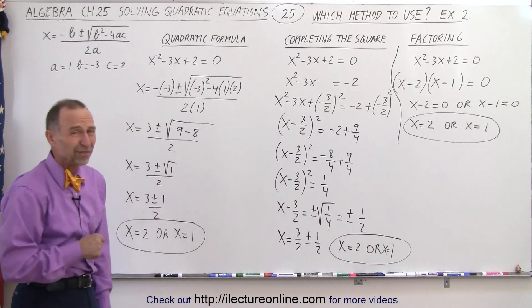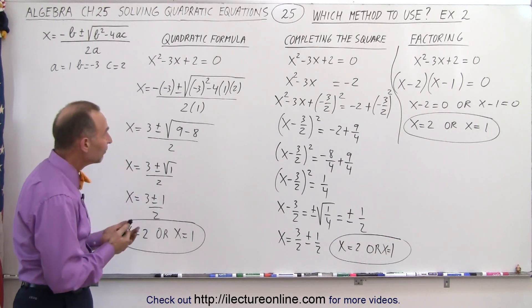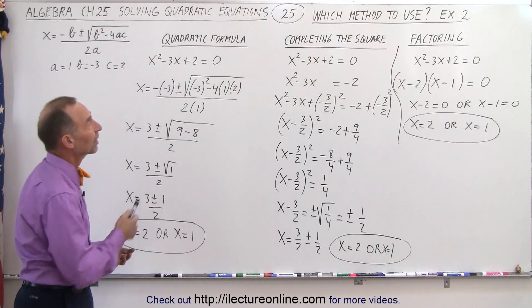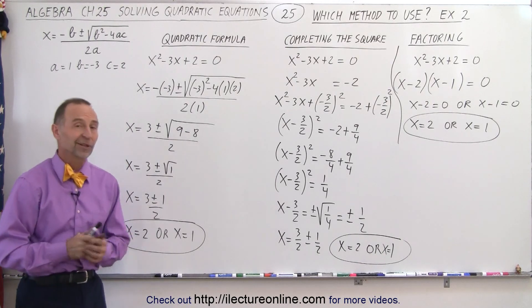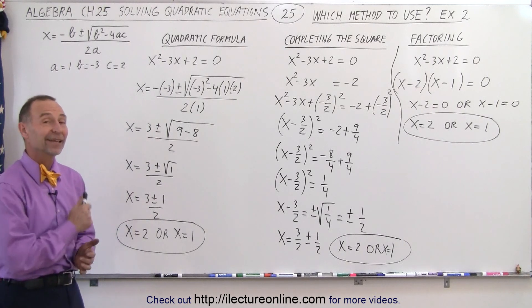Completing the square method seemed to be a lot of work. Using the quadratic formula was relatively quick. So I would say factoring was fastest, quadratic formula was second, completing the square was third, at least in my opinion. For whatever that's worth. And that is how it's done.